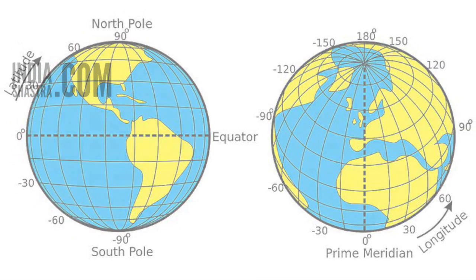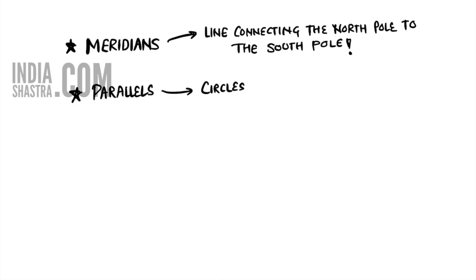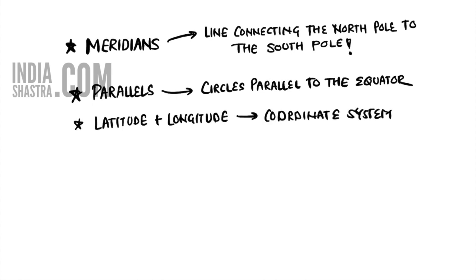Let me put this in a nutshell. Meridians are lines connecting the North Pole to the South Pole, whereas parallels are circles parallel to the equator. Latitude and longitude is a coordinate system used to locate a point on the earth and measured in degrees. You have to remember these three points to understand this topic better.